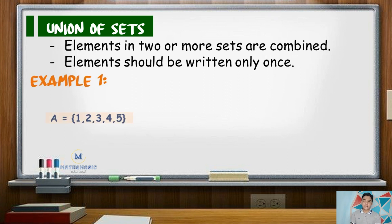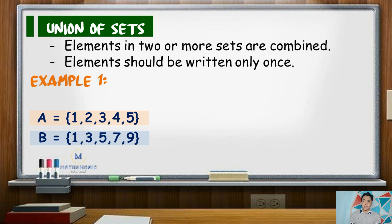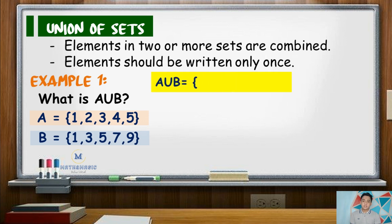So as an example, say set A contains the elements 1, 2, 3, 4, and 5 — or the first five counting numbers — while set B has the elements 1, 3, 5, 7, and 9 — or the first five positive odd integers. The question is, what is A union B? Here, we will just copy the elements of the two sets. For set A, we have 1, 2, 3, 4, and 5. For set B, since 1, 3, and 5 are already written in the set of A union B, we will no longer write those numbers. So we will proceed to writing the elements 7 and 9.